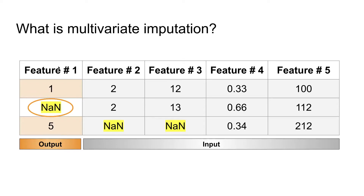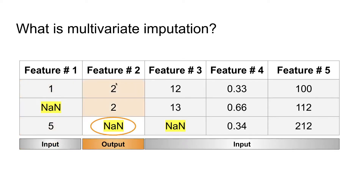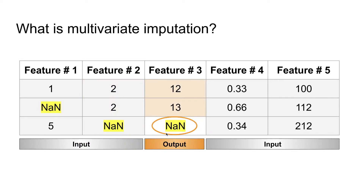First, we consider feature one and set it as the output column, then use the remaining four columns as input to a regressor that predicts the missing value in feature one. Moving on, the second feature is set as output and the remaining four features — features one, three, four, and five — are used as input to train a regressor and predict the missing value in feature two. Finally, feature three is set as output and the regressor is trained on features one, two, four, and five.